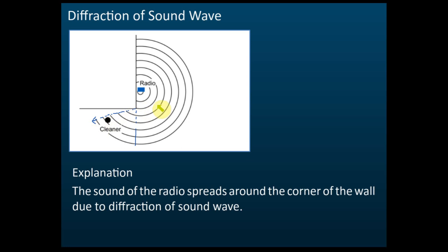Because the wavelength of the sound wave from the radio is quite large, it is diffracted more — the angle of diffraction is very large. Therefore the street cleaner can hear the sound of the radio. But we also learned that the amplitude of the wave will decrease after diffraction.